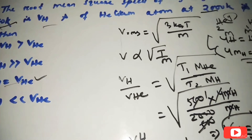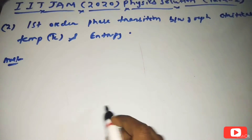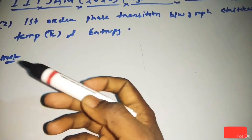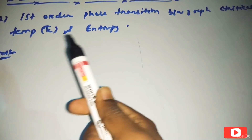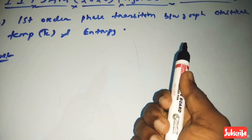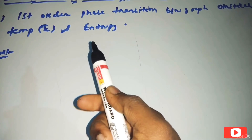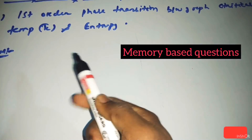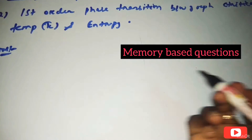Move to the second question. Given that there is a first order phase transition — the graph is between critical temperature and entropy. The graph asks about critical temperature as a function, and the answer involves the position of entropy on the axis.